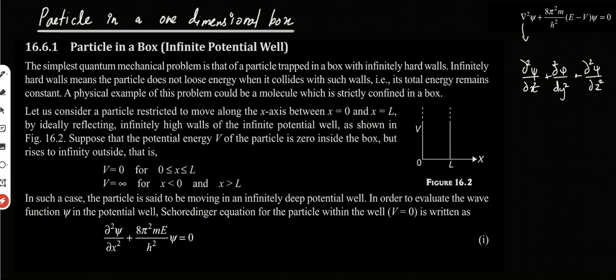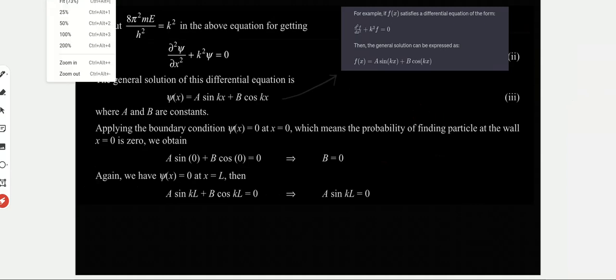The Laplacian operator is the sum of the second partial derivatives with respect to x, y, and z. We already know that the particle is restricted to move only along the x-axis, so the partial derivatives with respect to y and z are zero — there is no movement in the y or z axis. So the equation simplifies to a second derivative with respect to x only.